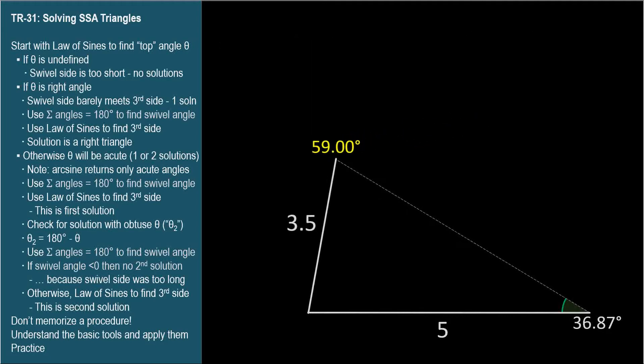Now we can find the angle at the swivel by subtracting the other two angles from 180 degrees. We get 84.13 degrees. Then, one more application of the law of sines to get the third side length, 5.8. And our triangle is solved.